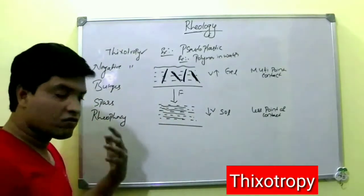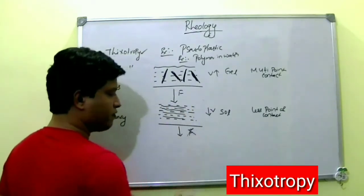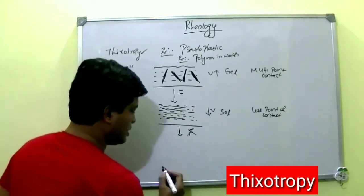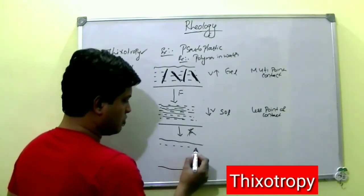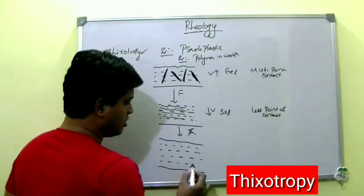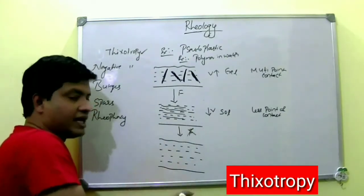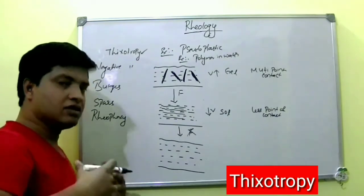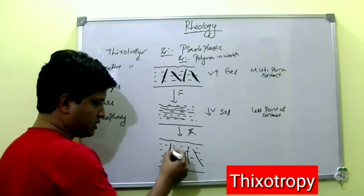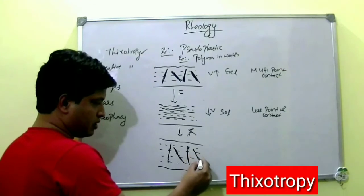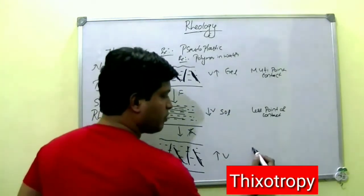Now what happens when I remove the shear stress? That is what is time-dependent. When I remove the shear stress, slowly the polymer will try to come back to its original position. The polymer that was aligned and dehydrated will again try to gain back its water molecules — it will swell and return to its original position. Again, viscosity increases and we have multiple points of contact.